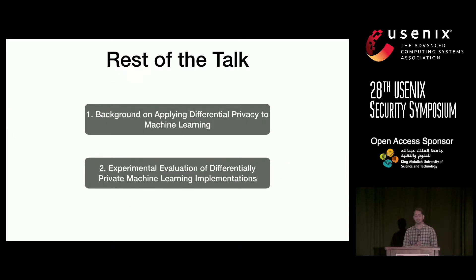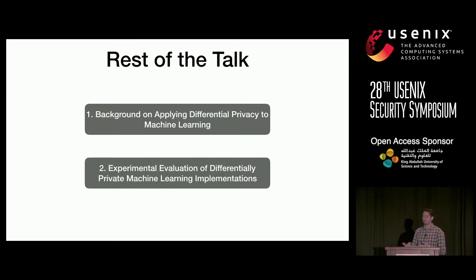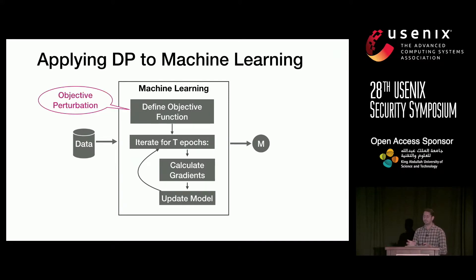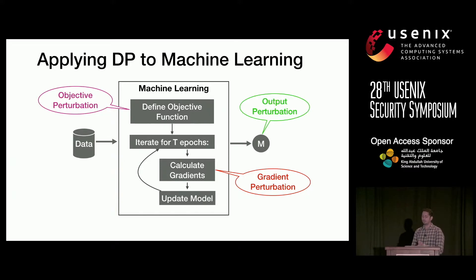For the rest of the talk, I'll first give a brief background about how to apply differential privacy to machine learning algorithms. This is the most popular flavor of training a machine learning model where you define an objective function and iteratively update the model. The first approach is to add noise to the objective function, called objective perturbation. Alternatively, you can add noise to the gradients, called gradient perturbation, or add noise to the model learned at the end, called output perturbation.